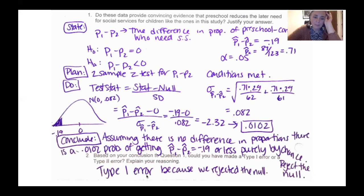Now we could talk about consequences and all that stuff. Like the consequence of rejecting what I shouldn't have is I'm wasting money on preschool or something like that. But that's for consequences in this one. So all we're doing is saying which type of error would it be.